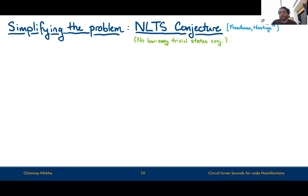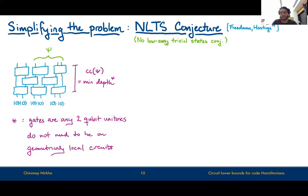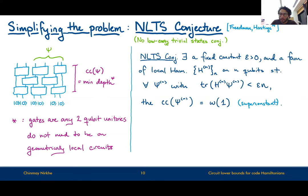To preface the NLTS conjecture, we first formalize what we mean by circuit depth. For any given state psi, the circuit depth of psi is the minimum depth when stacking two-qubit local gates — where the gates can be any two-qubit unitary, any connectivity — such that once you trace out some fraction of the qubits, the resulting state is exactly psi on those registers. The NLTS conjecture says there exists some fixed constant epsilon, say 1/100, and a family of local Hamiltonians H acting on n qubits, such that for all states of energy less than epsilon times the total, the circuit complexity must be super-constant.